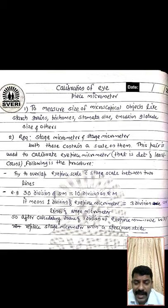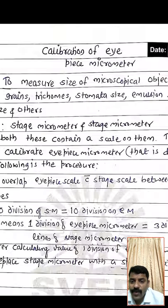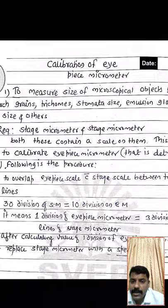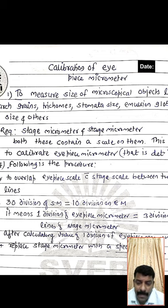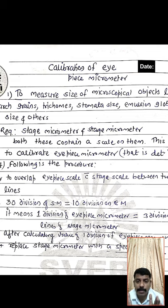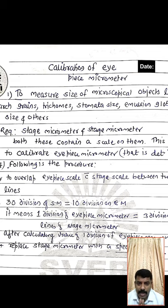After overlapping, suppose 30 divisions of the stage micrometer coincide with 10 divisions of the eyepiece micrometer. This means 30 lines of the stage micrometer are completely overlapped by 10 lines of the eyepiece micrometer. Therefore, one division of the eyepiece micrometer is equal to three divisions of the stage micrometer.